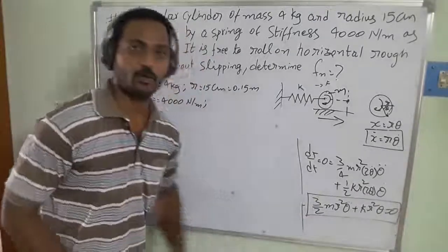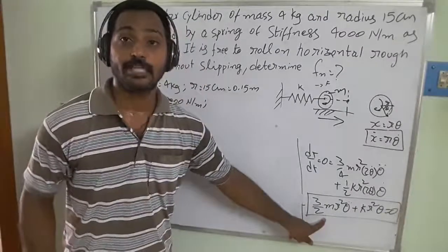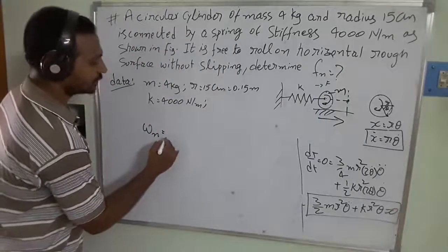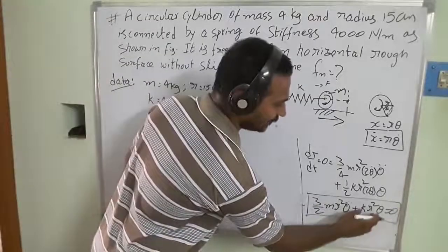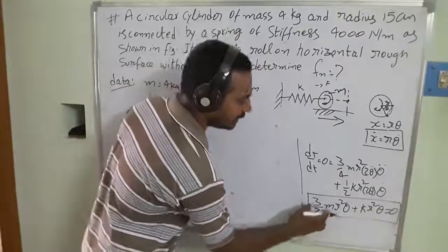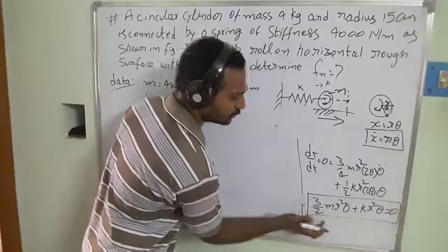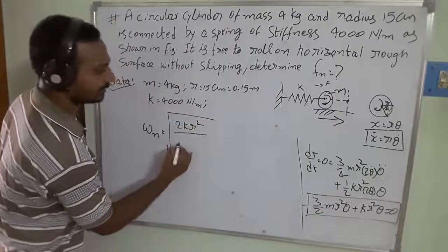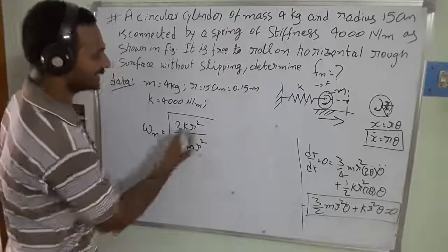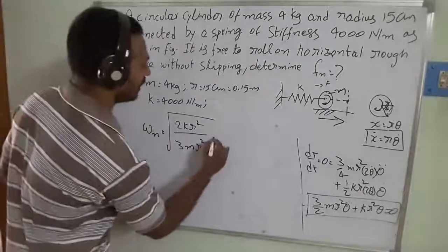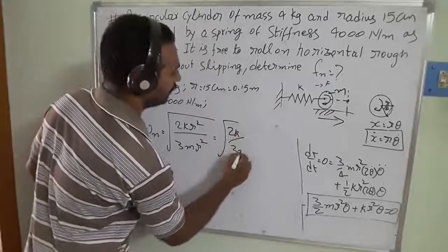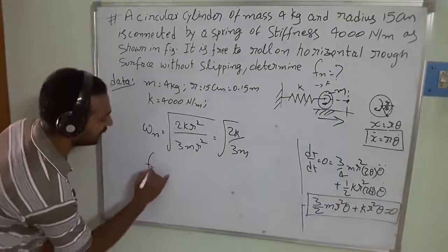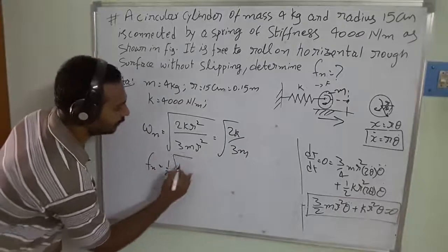From the equation of motion, the circular natural frequency omega_n equals the square root of k divided by m. In this case, the k value is k r squared and the m value is three-halves m r squared. This gives omega_n equals the square root of 2k r squared divided by 3m r squared. The r squared terms cancel, leaving omega_n equals the square root of 2k divided by 3m. The natural frequency f_n equals 1 over 2 pi times the square root of 2k over 3m.